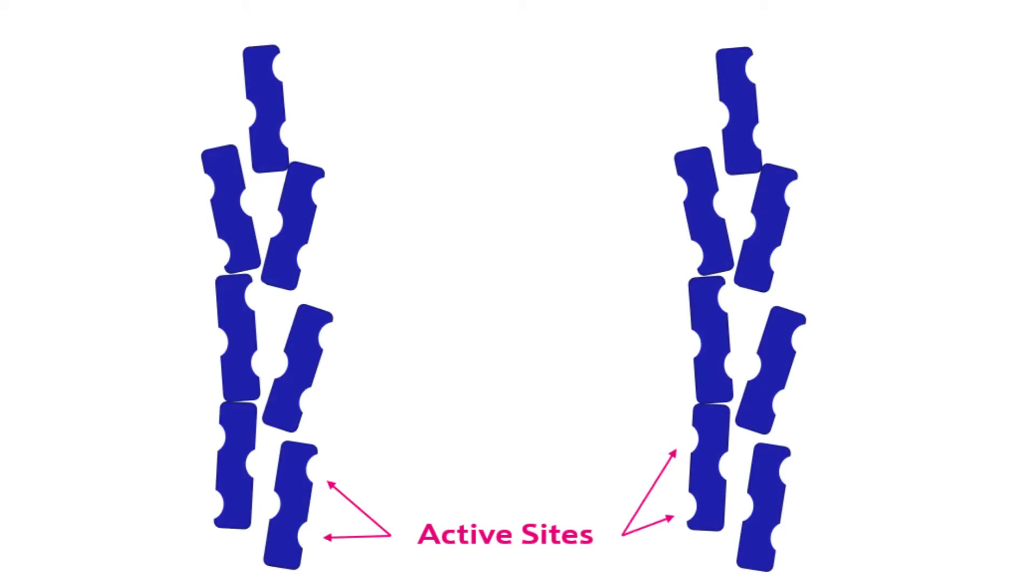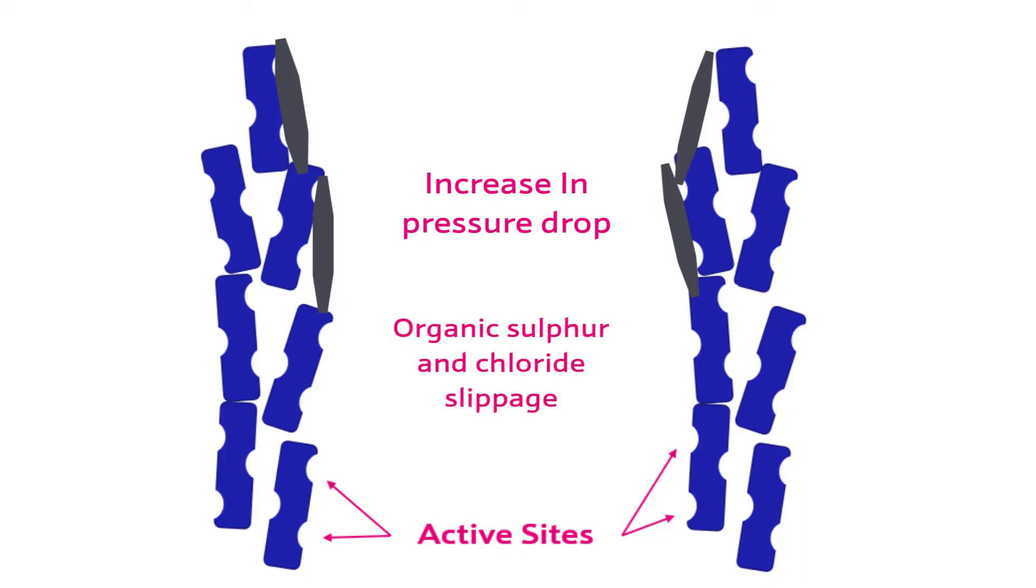There are several methods with which the HDS catalyst can become deactivated. One of the most common is carbon formation, which can occur in both the preheat coils and the top of the bed. When this occurs, carbon blocks the active sites of the catalyst, inhibiting the HDS reaction. A sign that this form of deactivation is occurring is an increase in pressure drop across the bed and organic sulfur or chloride slippage.